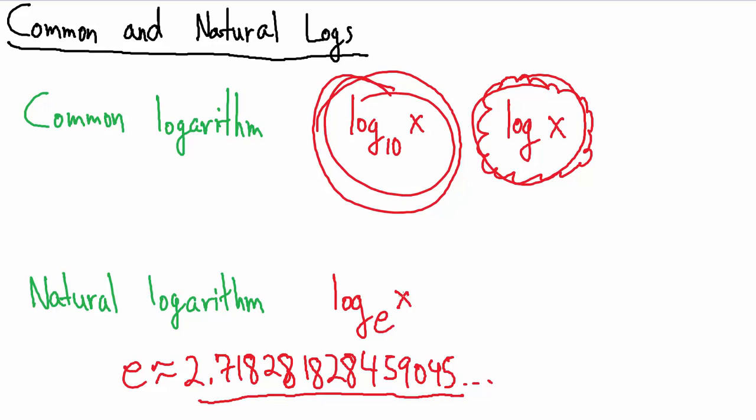But anyway, it's especially important in logarithms. So if we have the base e log of x, that's the natural logarithm. And the way we abbreviate that is ln x. So that's a lowercase l, lowercase n, and then x.